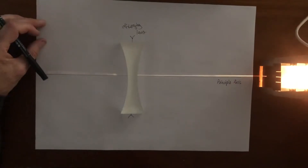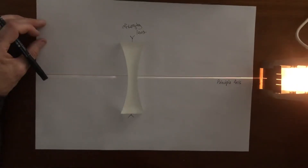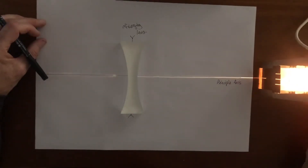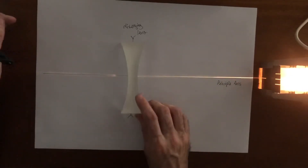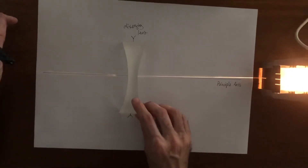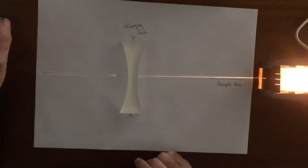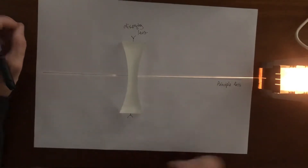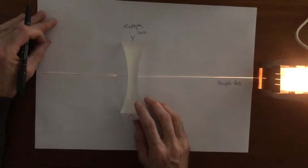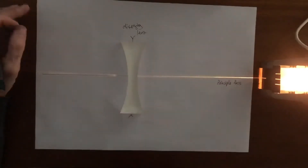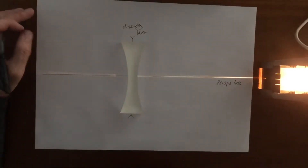Let's just make sure I've got it straight. I'm going to put a ray on the principal axis and it should come out along the principal axis on the other side. I'm going to use the same rays as I did for the converging lens and we're going to see what happens to them.